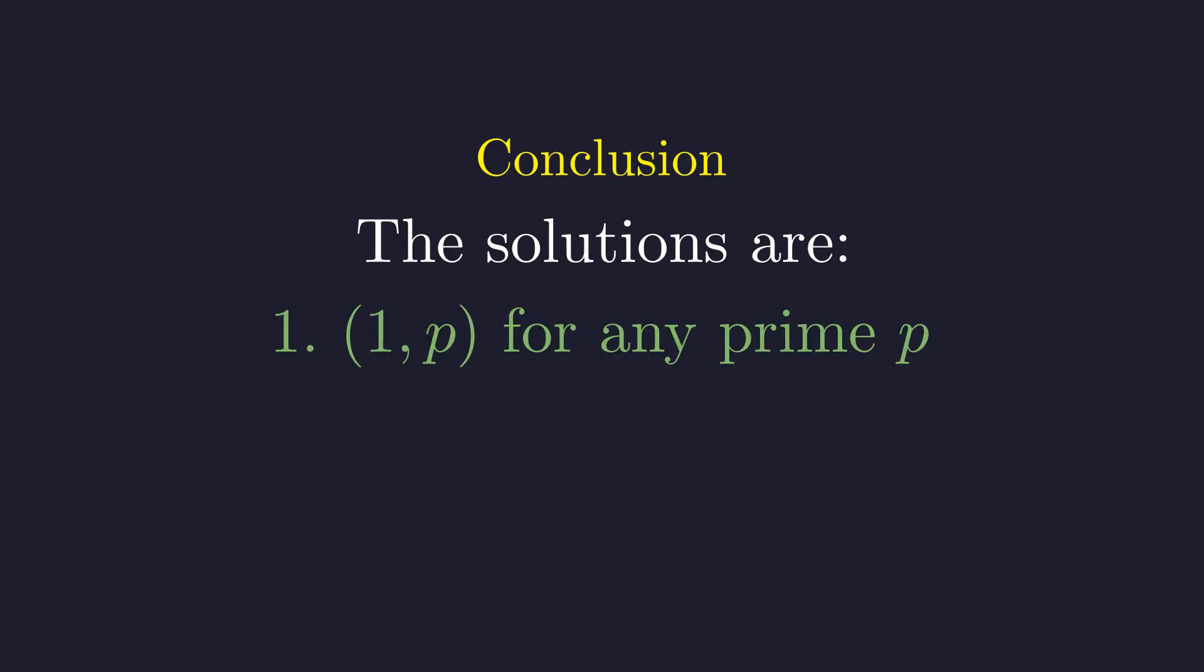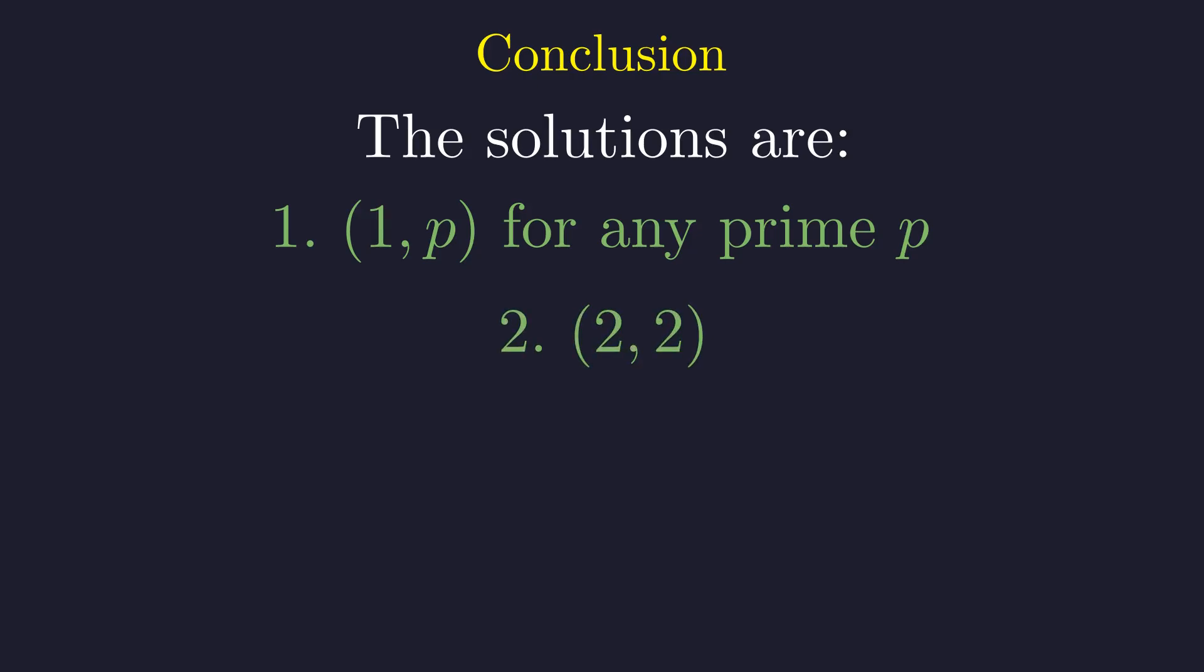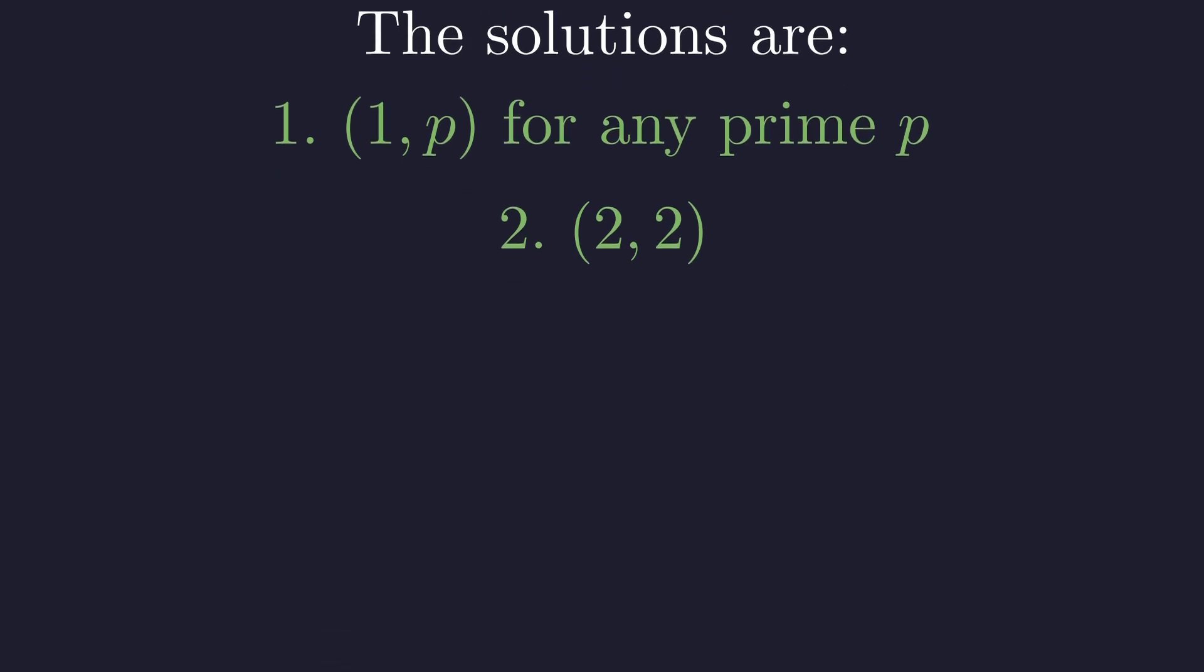Let us summarize the results of our analysis. After exploring all cases, we found three distinct sets of solutions. First, the infinite family of pairs (1, p) for any prime p. Second, the special pair (2, 2), arising from the unique properties of the only even prime. And third, the pair (3, 3), discovered through the p-adic valuation analysis that restricted this possibility to p equals 3.